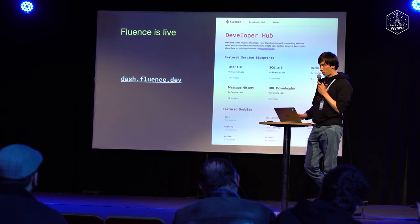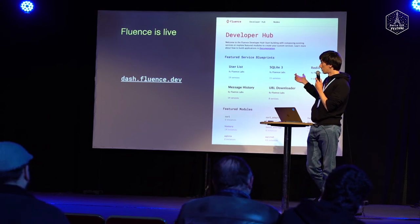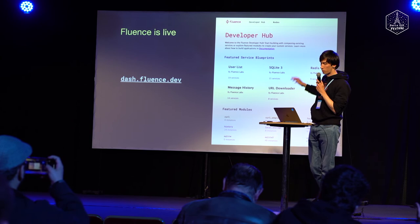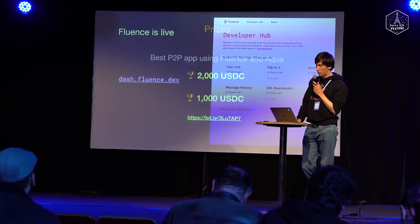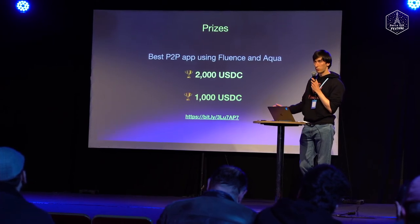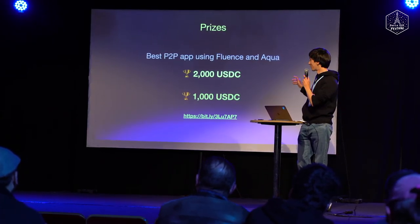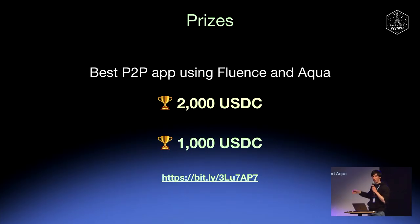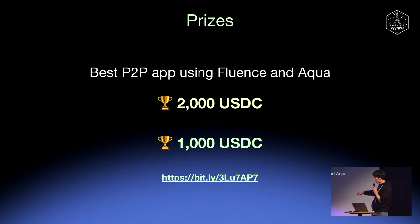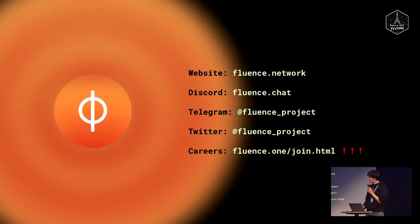Here are a couple of links. This is the network dashboard — you can see some services and nodes running right now. At this hackathon we have two prizes: just build the best application with Fluence and get great prizes. You can see more details about our bounties at the link shown.